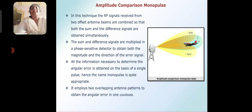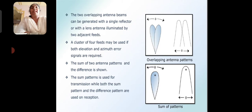Hence the name monopulse is quite appropriate. It employs two overlapping antenna patterns to obtain the angular error in one coordinate. The two overlapping antenna beams can be generated with a single reflector or with a lens antenna illuminated by two adjacent feeds. A cluster of four feeds may be used if both elevation and azimuth angle signals are required. The sum pattern is used for transmission while both the sum and difference patterns are used in reception.